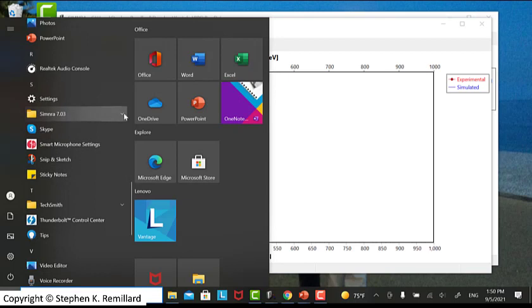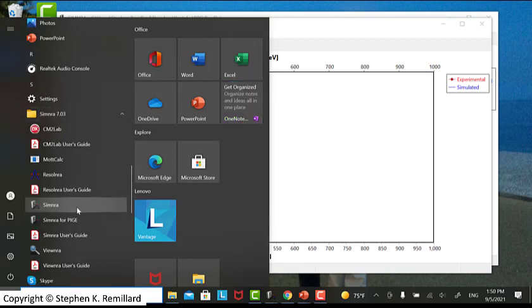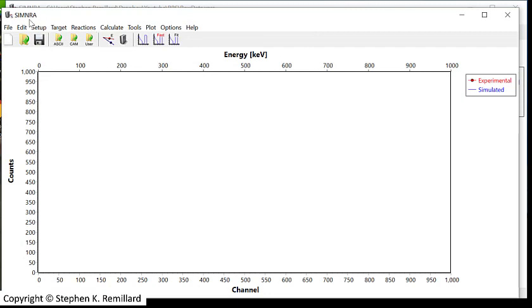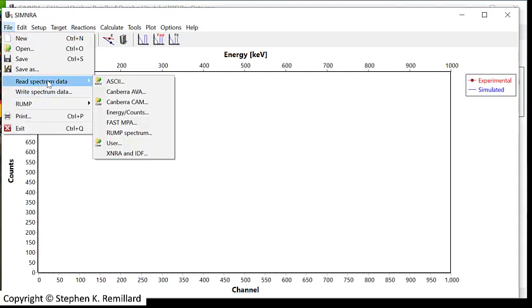Begin by opening SimNRA. It's the executable called SimNRA. Just click on it, and it will open up with a blank screen. If you have not been using SimNRA, it will be completely blank. Otherwise, some of the setup will be prefilled from your previous run. So let's start by bringing in data. You go to File, Read Spectrum Data.